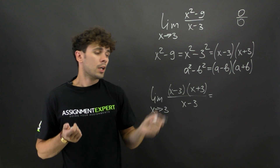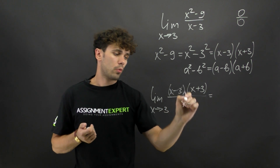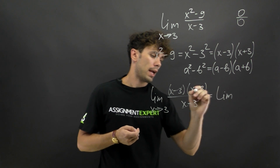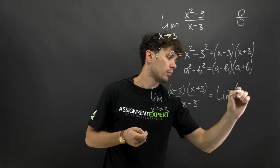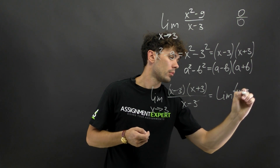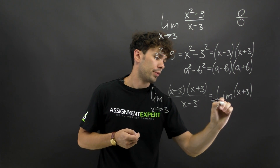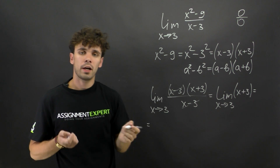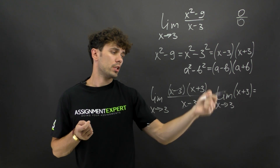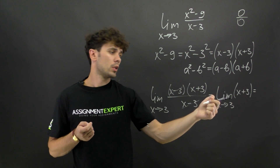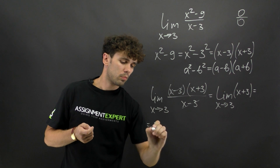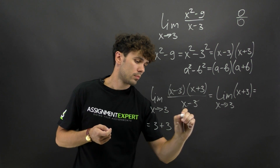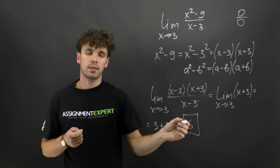Now we can cancel out x minus 3, and we are left with the limit of x plus 3 as x tends to 3. Finally we just need to substitute 3 into our limit: we get 3 plus 3, which is equal to 6. This is our answer.